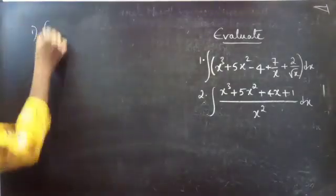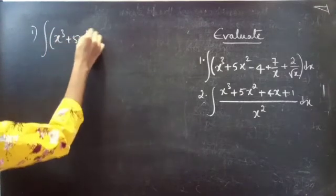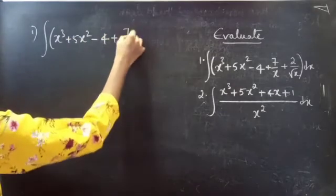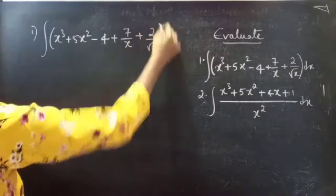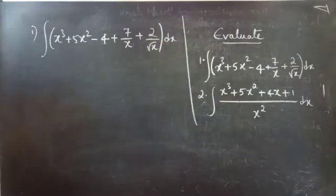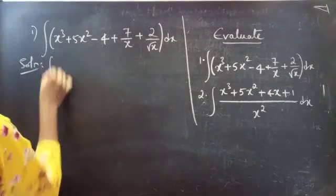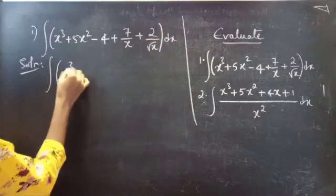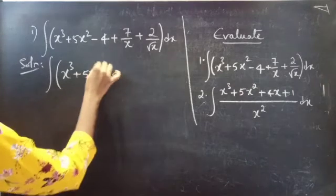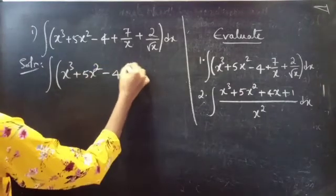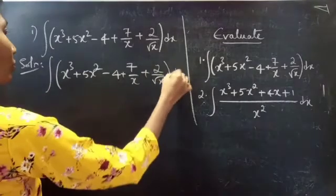First one: integral of x cubed plus 5x squared minus 4 plus 7 by x plus 2 by root x, into dx.